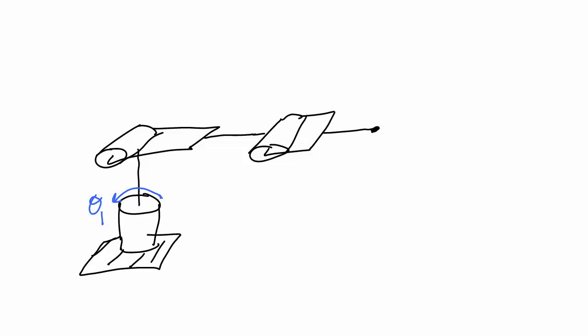We found that for my servos, the positive direction of the second servo was this way because the link moved up when we moved it in the positive direction. But for the third servo, when we moved it in the positive direction, the last link went down. So this is the positive direction for servo three. Now I can draw in my axes to be consistent with these positive directions of rotation. Z has to be the axis of rotation and I have to draw it so it's consistent with the positive direction that we drew.